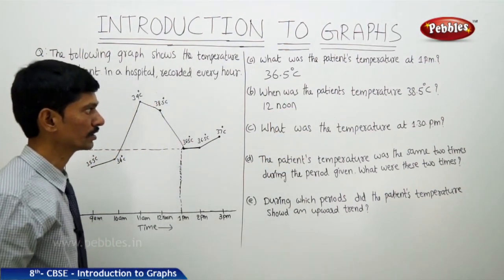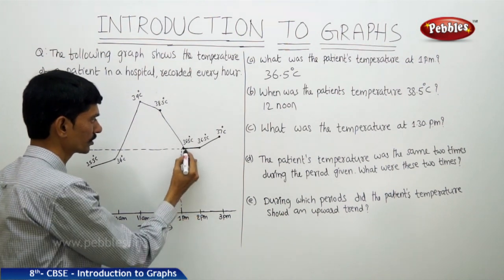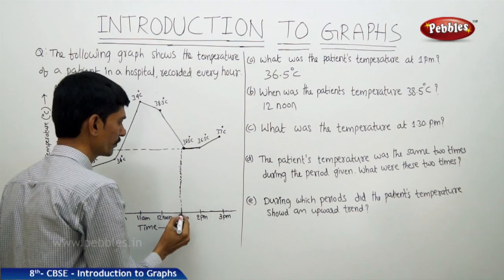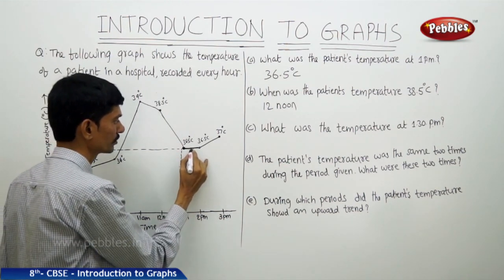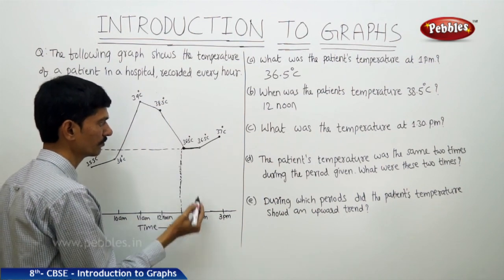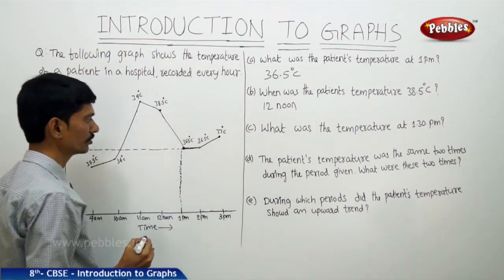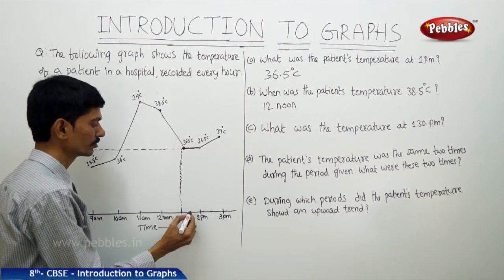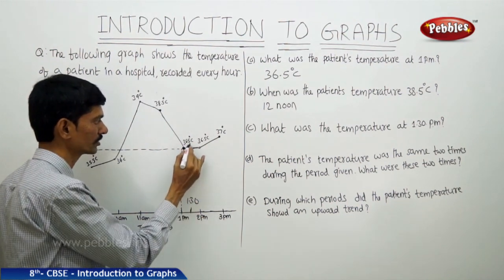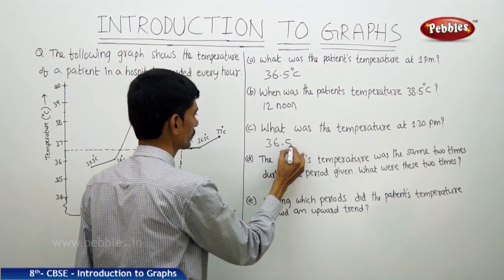Next question: what was the temperature at 1:30 p.m.? Observing the line graph from 1 p.m. to 2 p.m., the temperature is constant — there is no change. At 1 p.m. it is 36.5°C and at 2 p.m. it is also 36.5°C. This horizontal line segment represents no change in temperature. Therefore at 1:30 p.m., the patient's temperature is also 36.5°C.